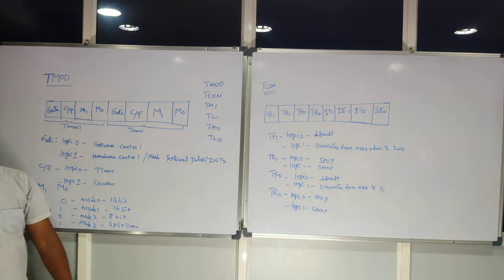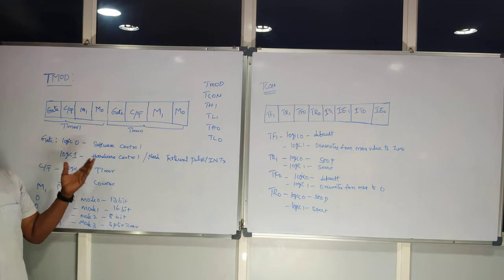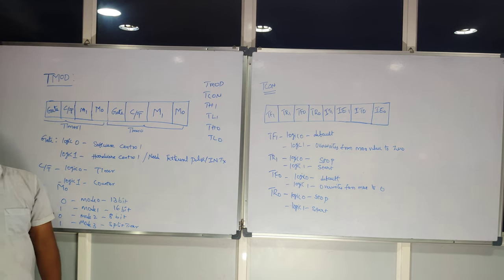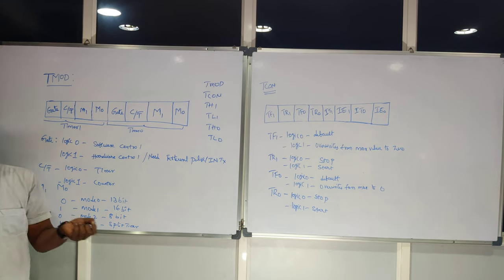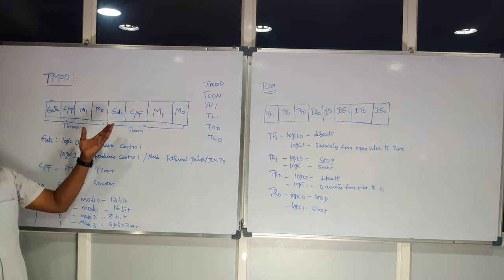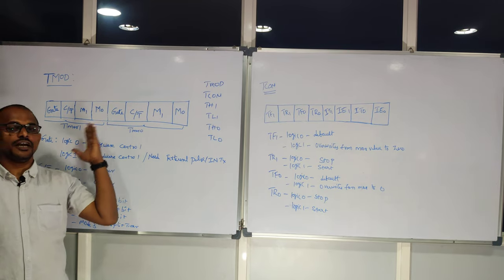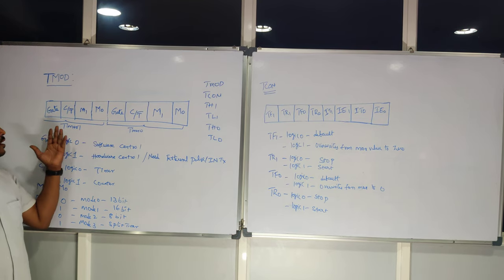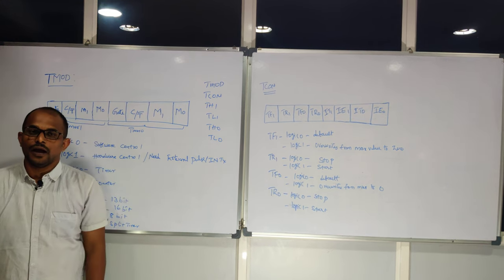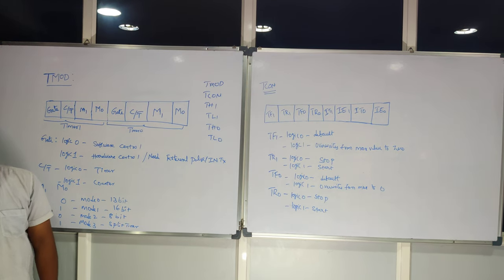Coming to T-MOD, the name itself stands for timer mode register. This register helps us choose which timer you want among the two timers, and what counter you are trying to use in the application. T-MOD is an 8-bit register and it is not a bit-addressable register.